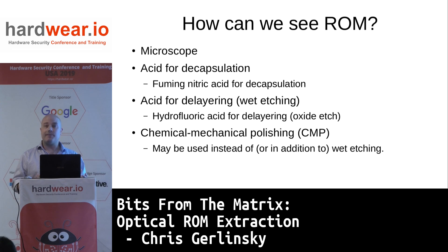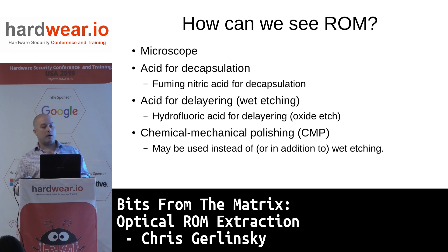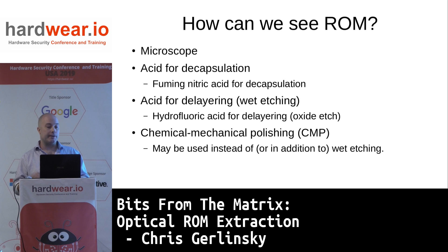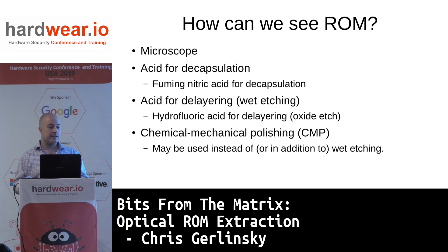If we want to look at the ROM, we need a microscope. We need acid for decapsulation because the chip is always inside some sort of plastic package. We use fuming nitric acid to clean off all the plastic. In some cases the ROM will be visible just looking at the chip. Typically the ROM is encoded on a lower layer, and especially modern chips have many different layers of metal on top, so we have to de-layer it. We can use hydrofluoric acid — wet etching — to remove the oxide. Or another option is chemical mechanical polishing, CMP, which Chris also mentioned for preparing samples for analysis in the FIB.